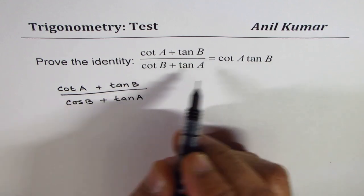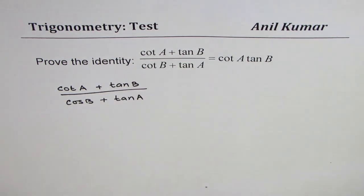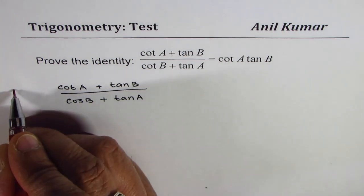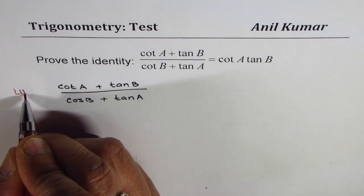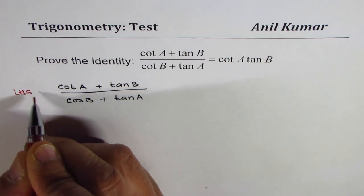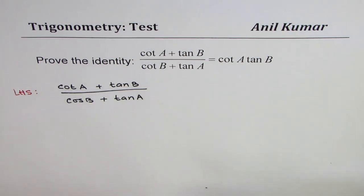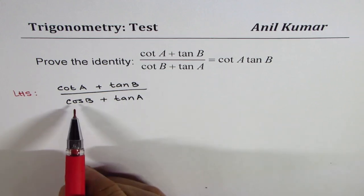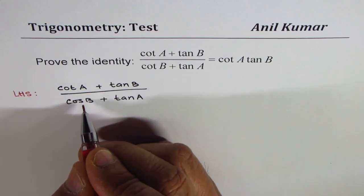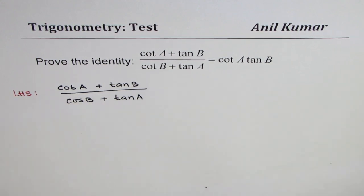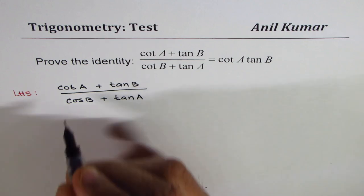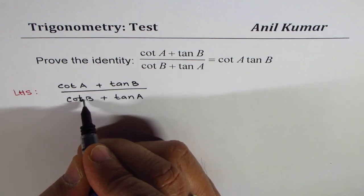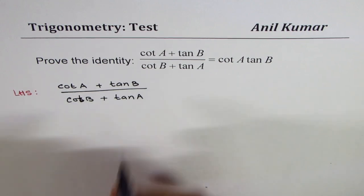Normally we start from one side, so let me start from the left side. We can always simplify this. The left side for us is cot A plus tan B divided by cot B plus tan A.